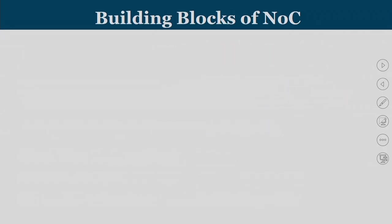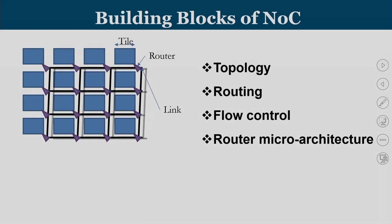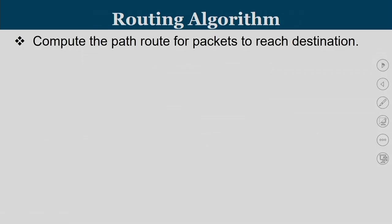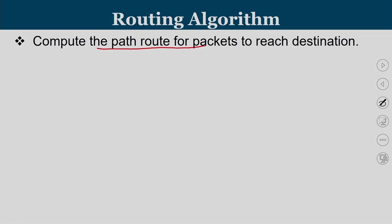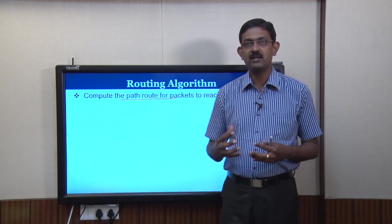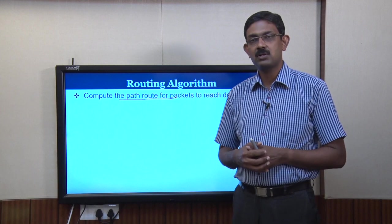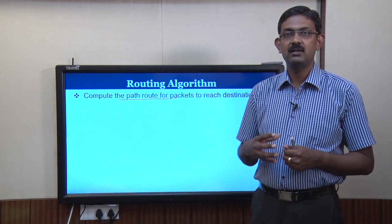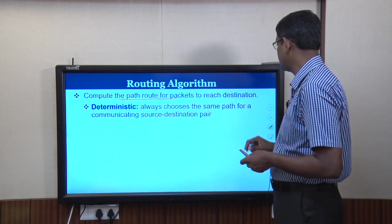To continue our discussion, let us see the remaining building blocks. Out of the 4 basic building blocks for NOC, we have covered topology already. Today our focus will be on routing, and the next lecture will cover flow control and router microarchitecture. The job of a routing algorithm is to compute a path for packets to reach the destination. Packets are created from a source tile and travel through intermediate routers and links to reach the destination.